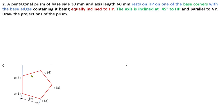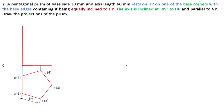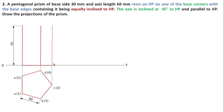Now extend the projectors from all the corners. After extending projectors from all the corners, join the base of the pentagonal prism. Then the longer edges have to be extended — the axis length is 60 mm, so the length of the longer edges is 60 mm. Complete all the longer edges and finish the front view.